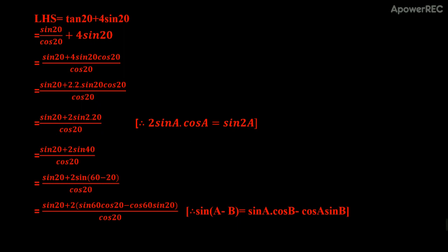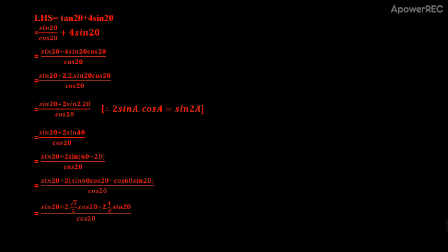sin(60° − 20°) is in the form sin(A − B), and we have the formula sin(A − B) = sinA·cosB − cosA·sinB. Here A = 60° and B = 20°, so we expand it as sin60°·cos20° − cos60°·sin20°, divided by cos(20°).